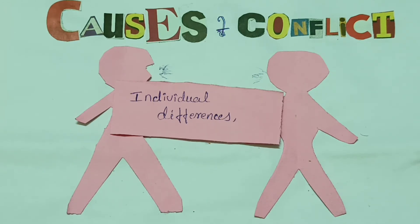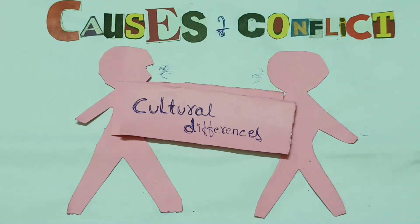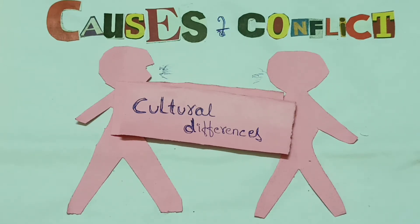The next cause for conflict is cultural differences. Culture differs from society to society and also from group to group. These differences sometimes cause tension and lead to conflict. Religious differences have often led to wars and other types of tension throughout history.